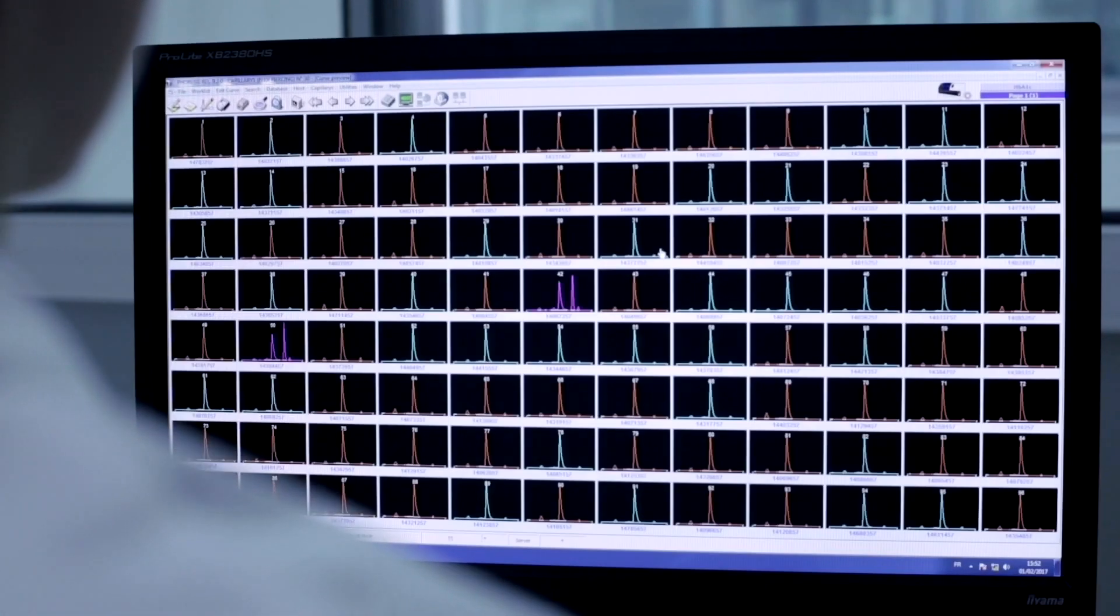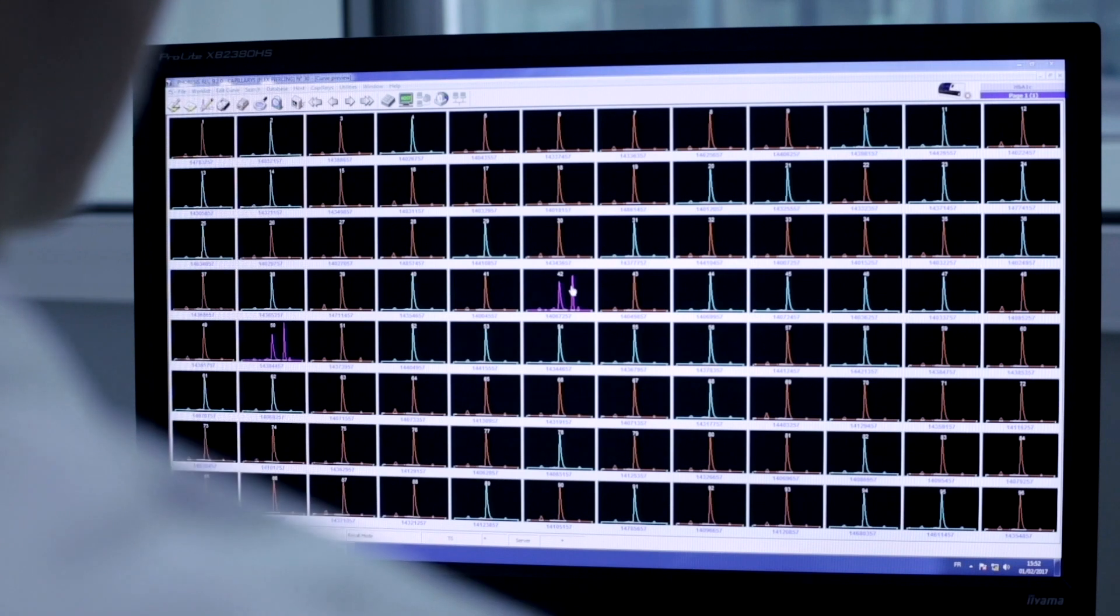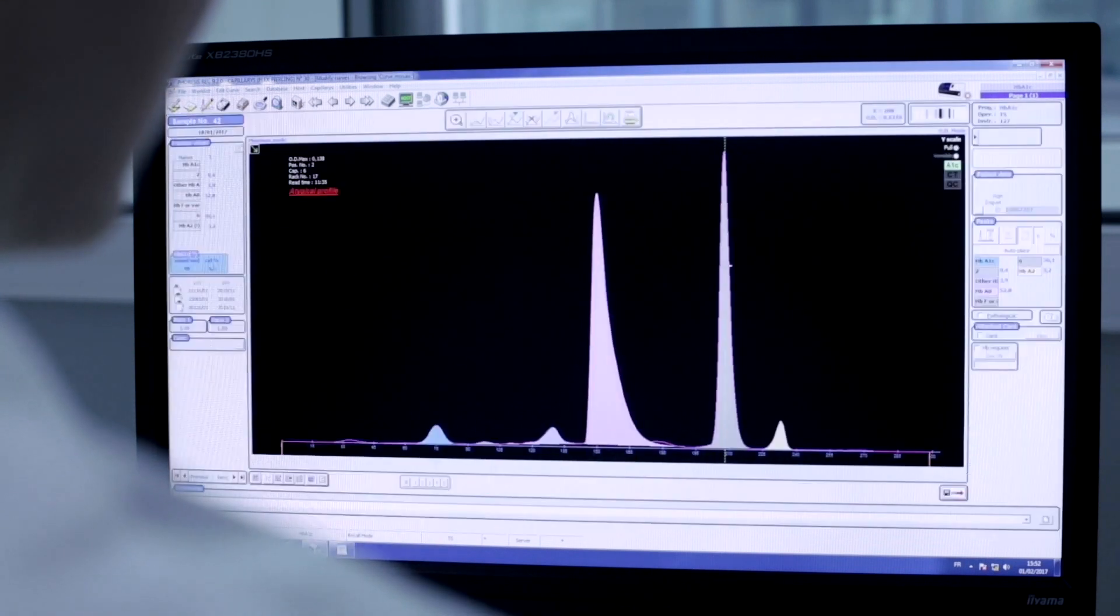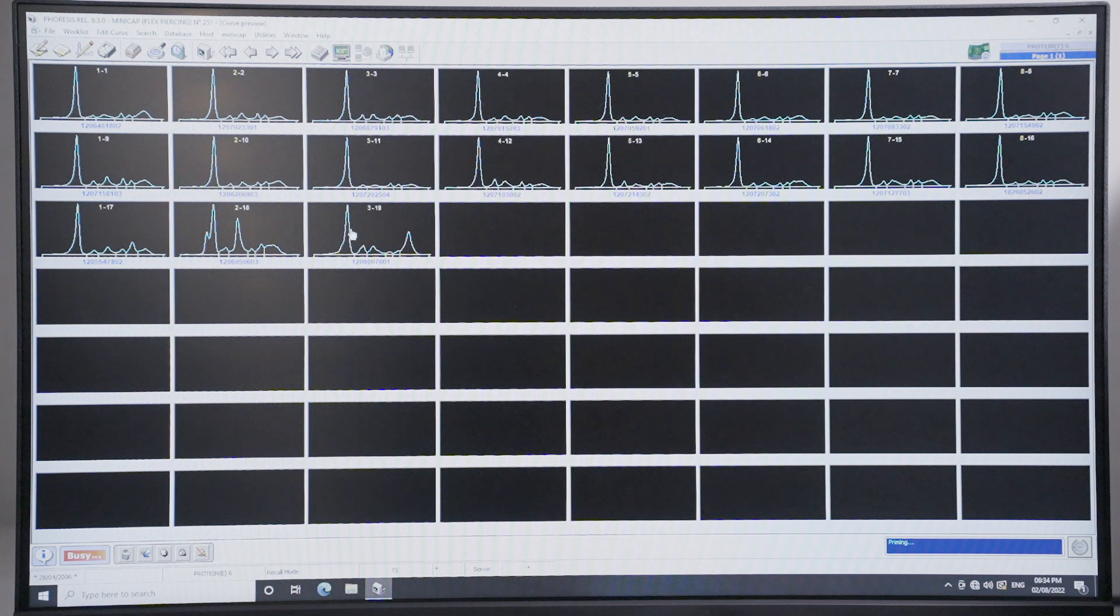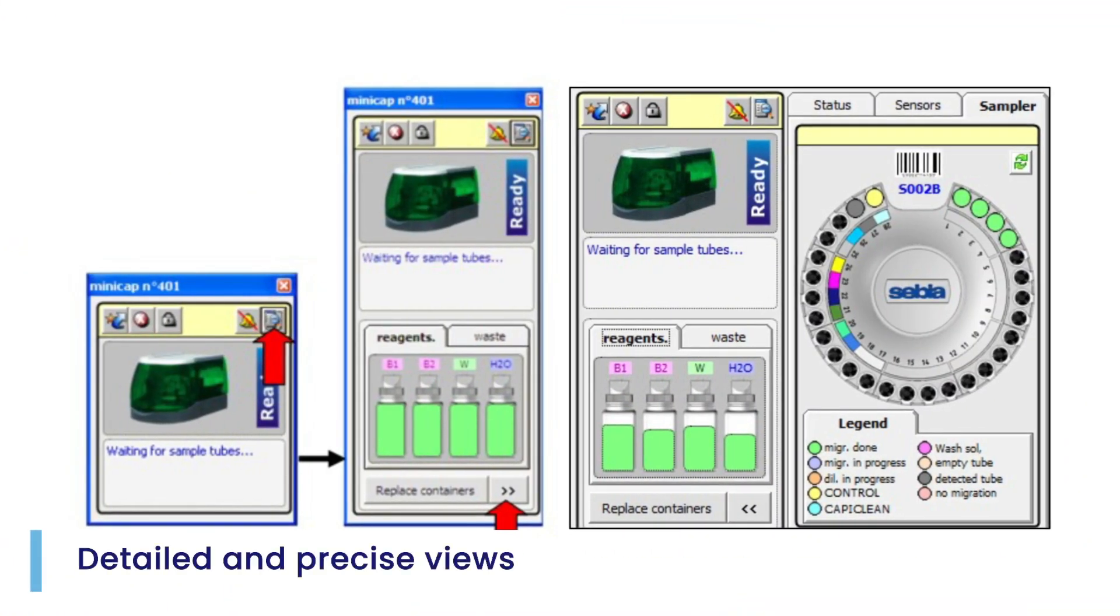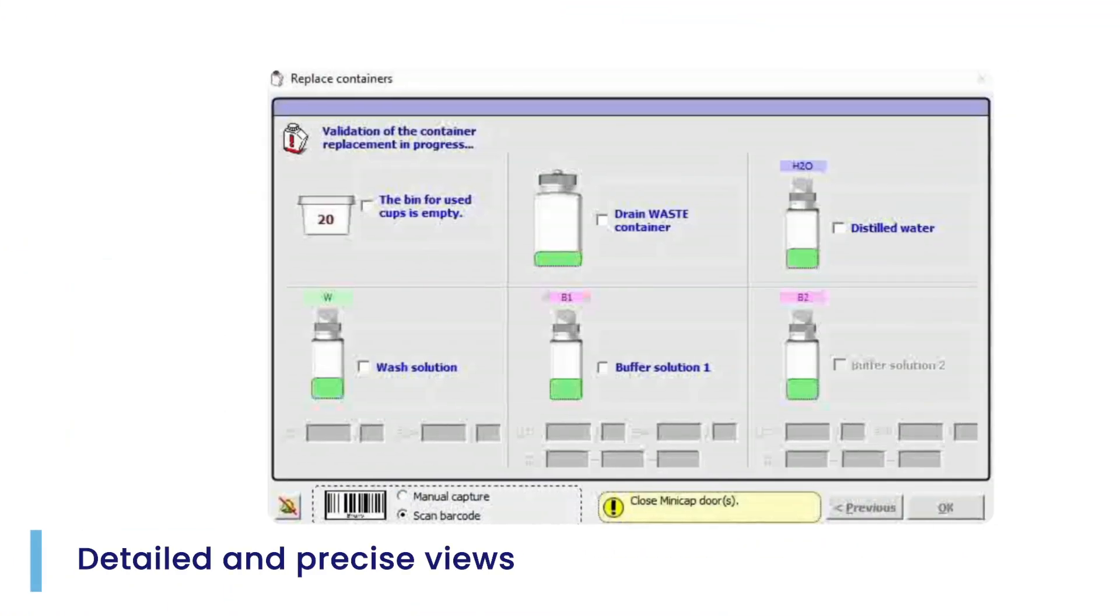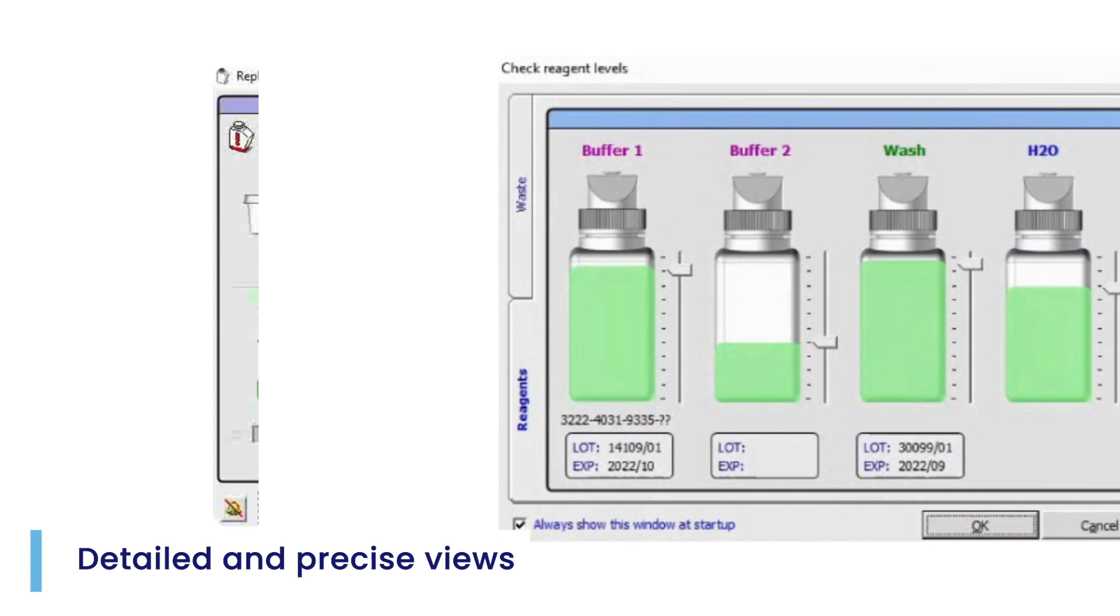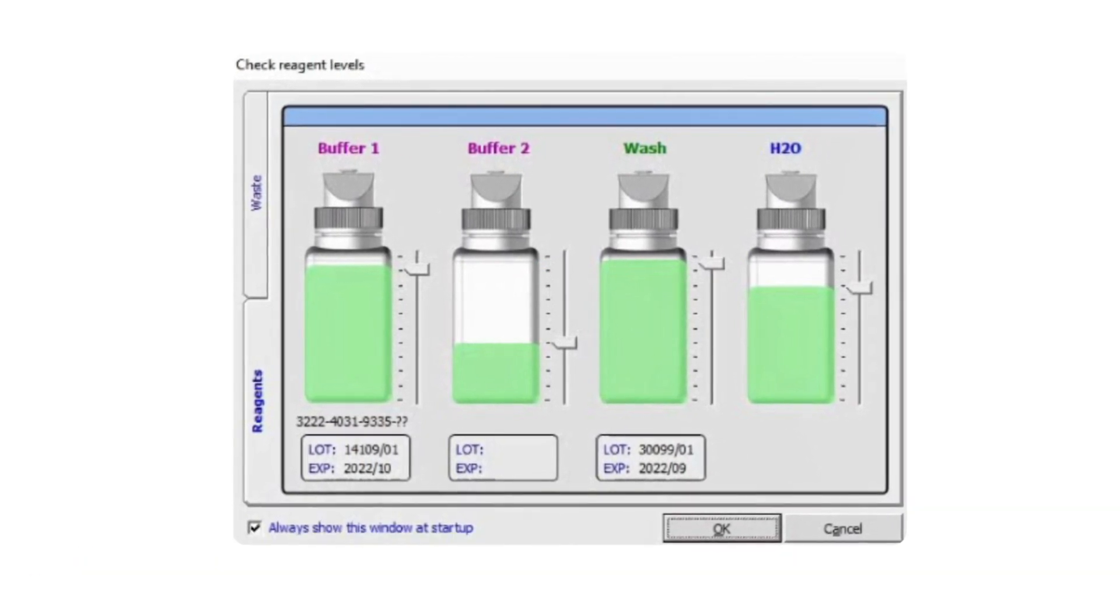The color coded curves on mosaic screen help in sorting of normal and abnormal profiles with advanced alarm system which allows fast validation of results. It provides a detailed view of carousel, reagents and progress of dilution and migration on the computer screen.